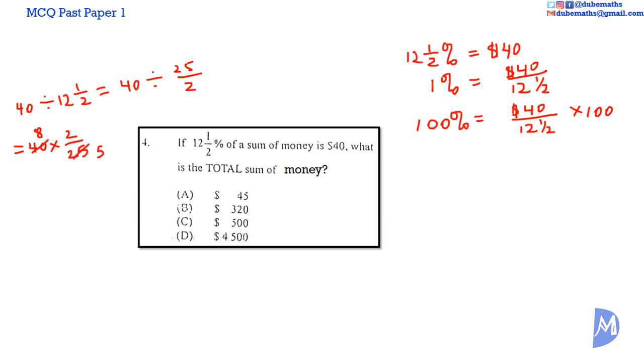Sixteen over five is equal to 3 and one fifth. We know that one fifth is 0.2, so 3.2. So we found out that 40 divided by 12.5 is equal to 3 dollars and 20 cents. Three dollars and 20 cents multiplied by 100 is equal to 320 dollars. So that's B.